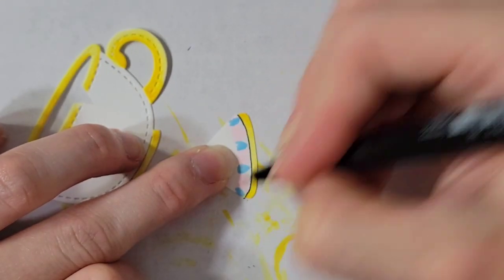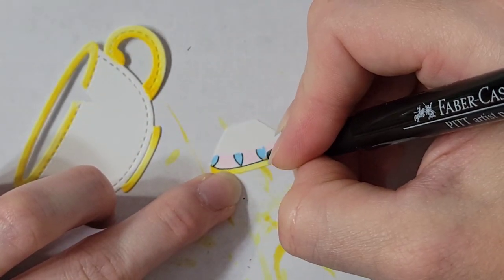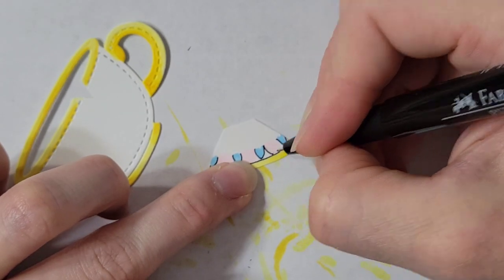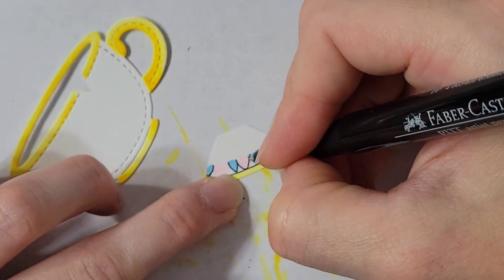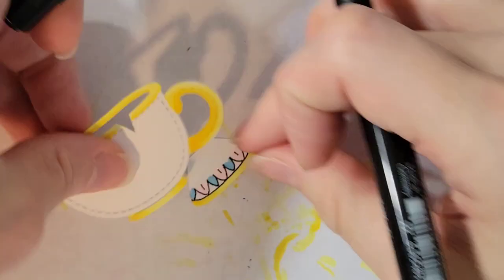Again with my fine liner, I'm just tracing out the details. I figured this part would be easier before I adhered this piece to the teacup.